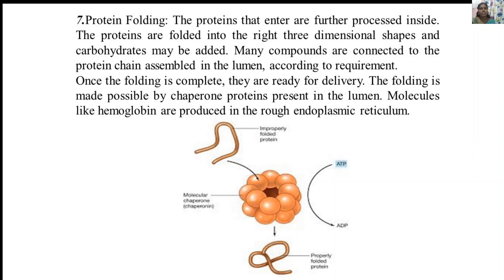The next function is protein folding. Proteins that enter the endoplasmic reticulum are folded into the correct three-dimensional shapes; carbohydrates may be added and many compounds connected to the protein chain assembled in the lumen. Once folding is complete, the proteins are ready for delivery to their site of function. Folding is made possible by chaperone proteins present in the lumen, and molecules like hemoglobin are produced in the rough endoplasmic reticulum. This protein confirmation process requires energy in the form of ATP.